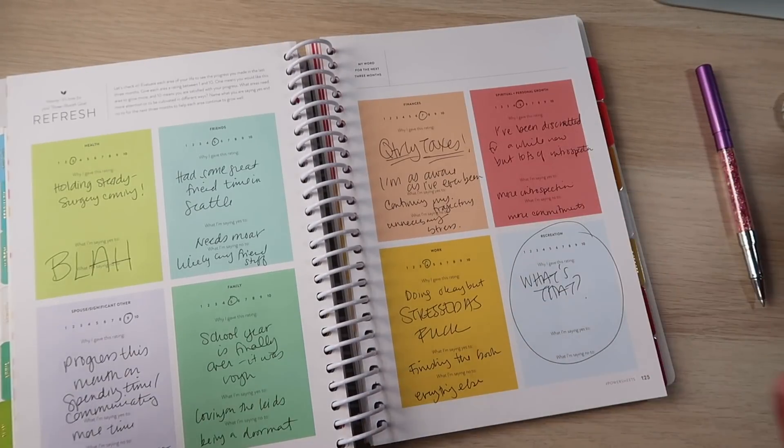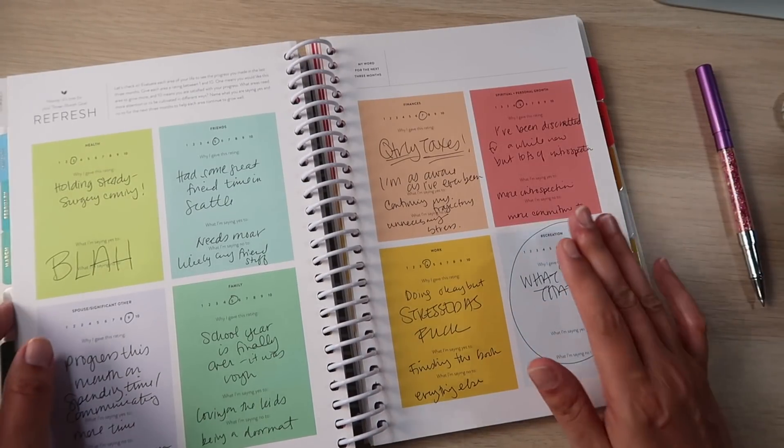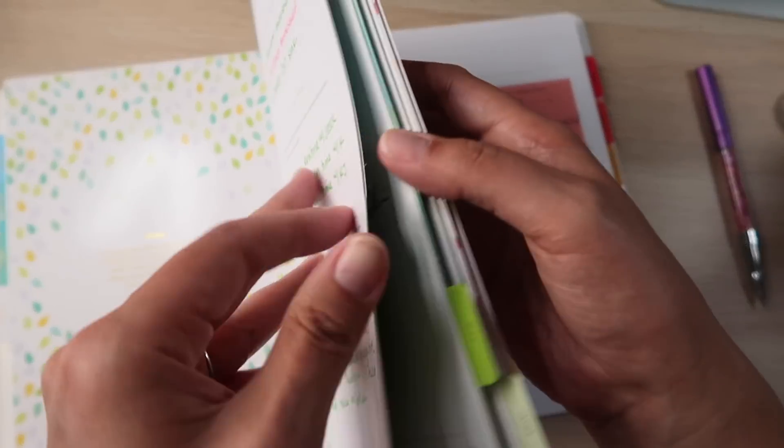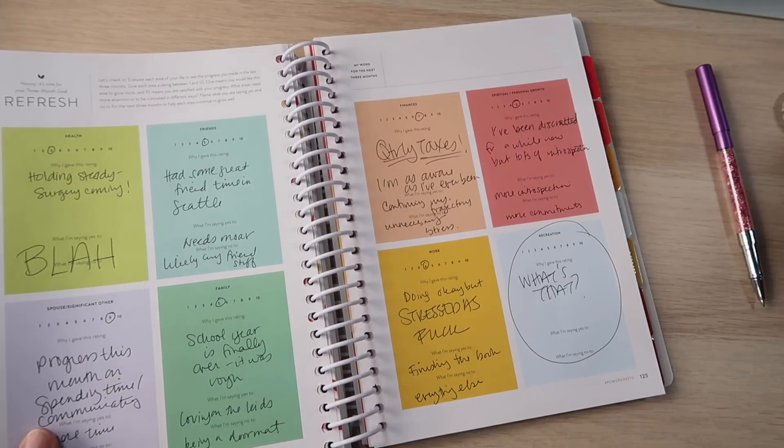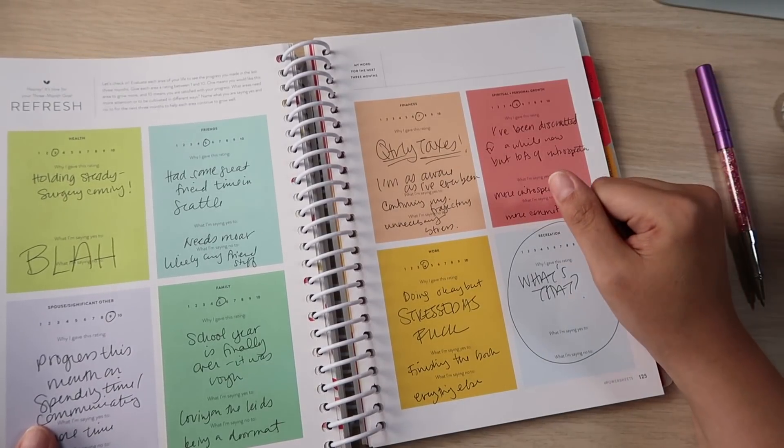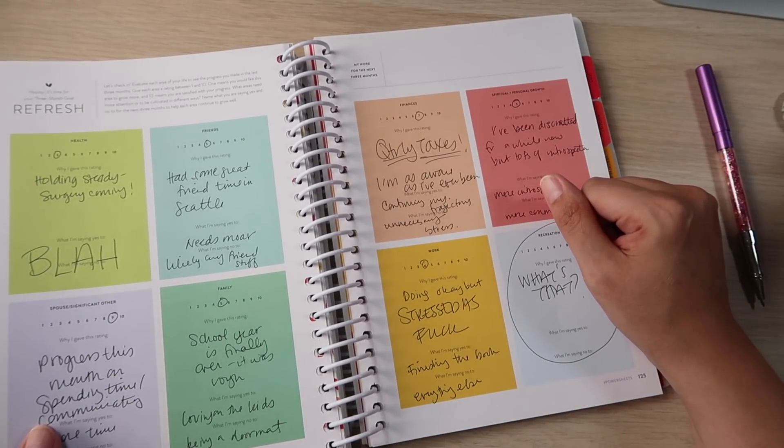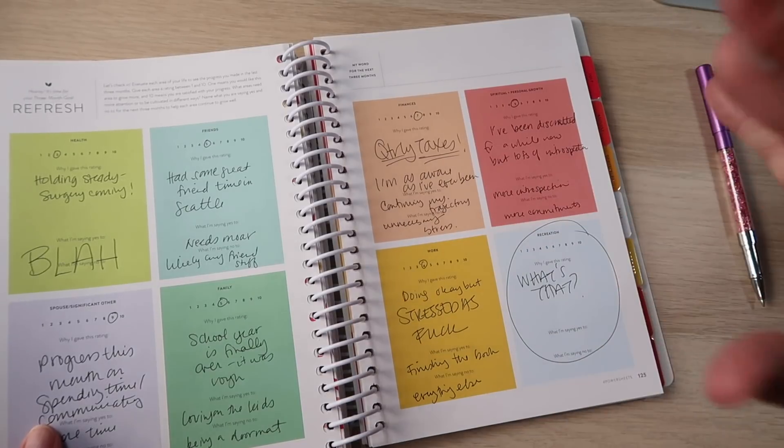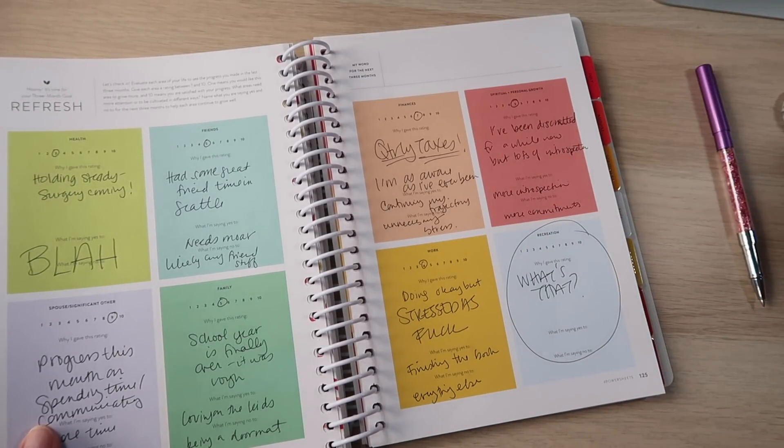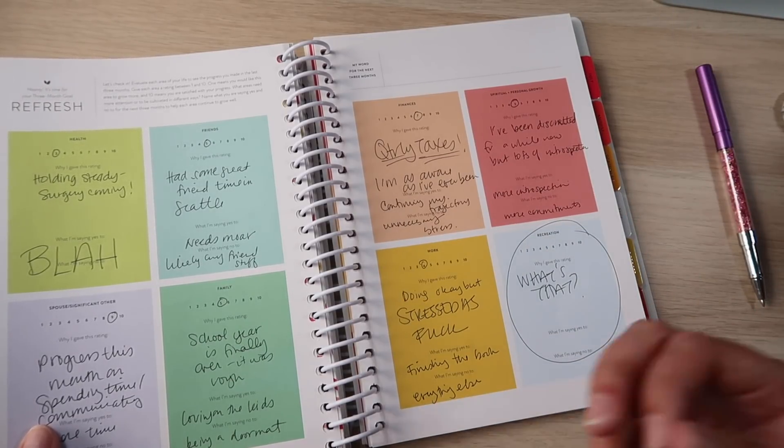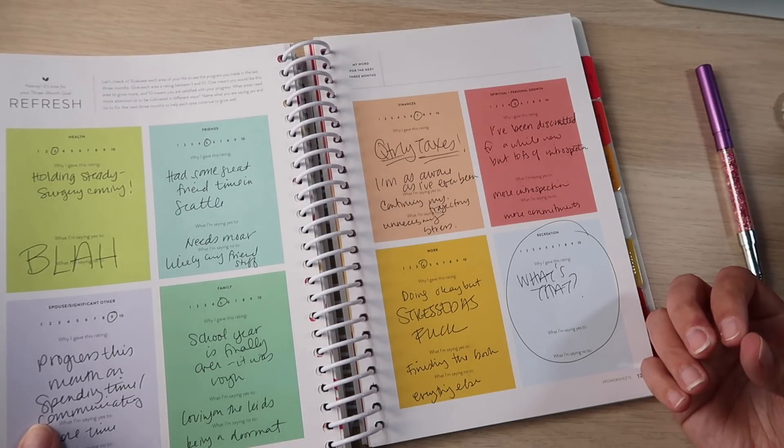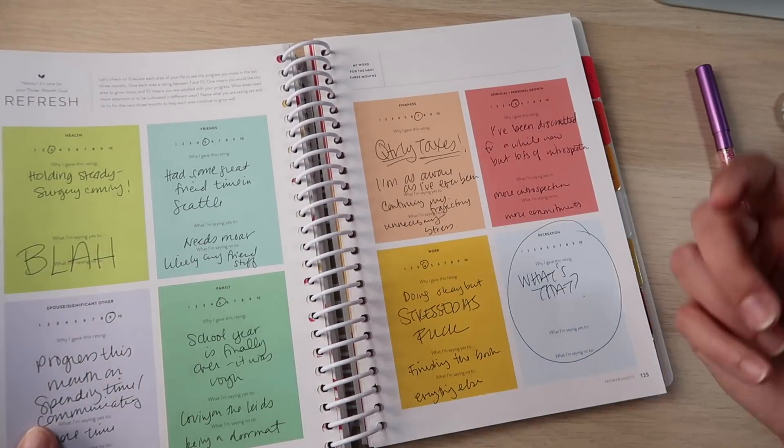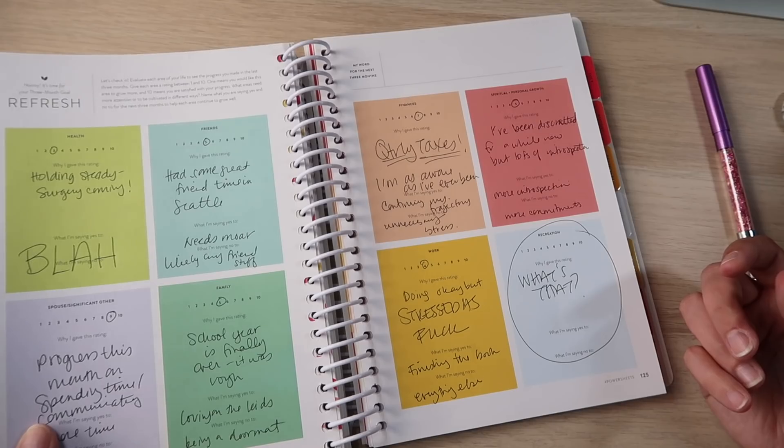And I want to compare to the springtime check-in. So for my health in the spring, it was a four and I marked it as a three and maybe the reason it went down is because I am stressed out about this surgery coming up and I'm just like nothing has really changed in terms of my overall health, but between the never ending allergies and having this surgery coming up and feeling super depressed about it, I just, I'm not in a good place when it comes to my health. I didn't even put anything else here. I just wrote blah because that's where I'm at friends.